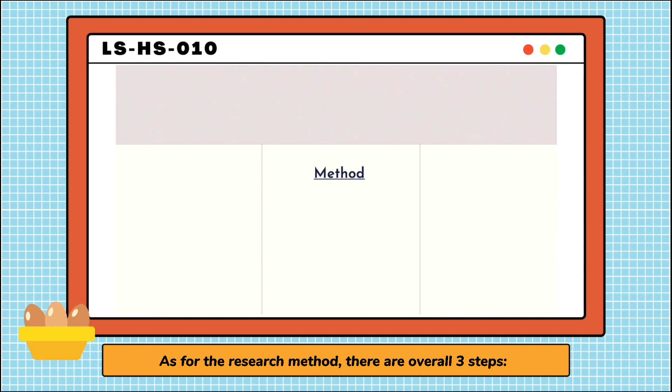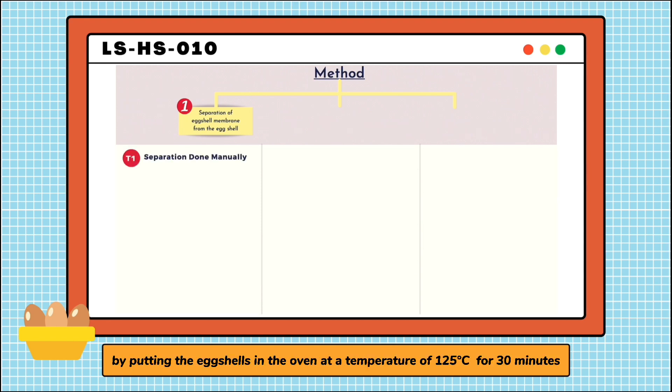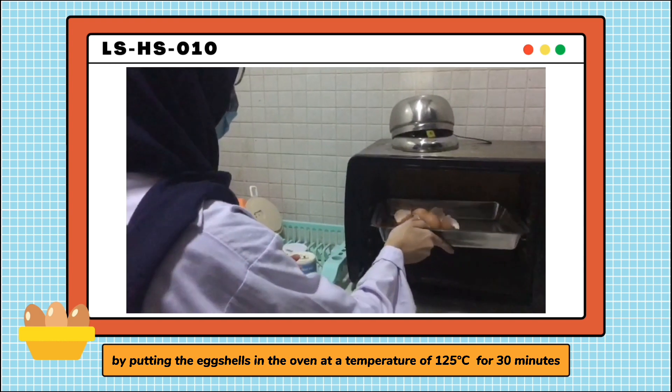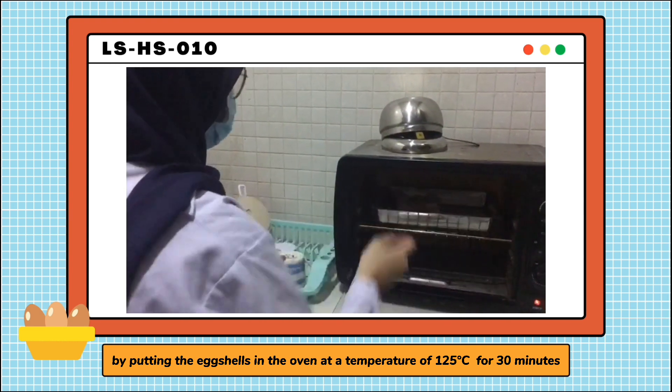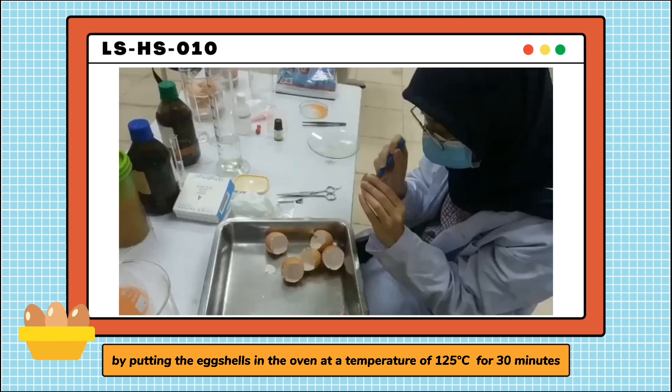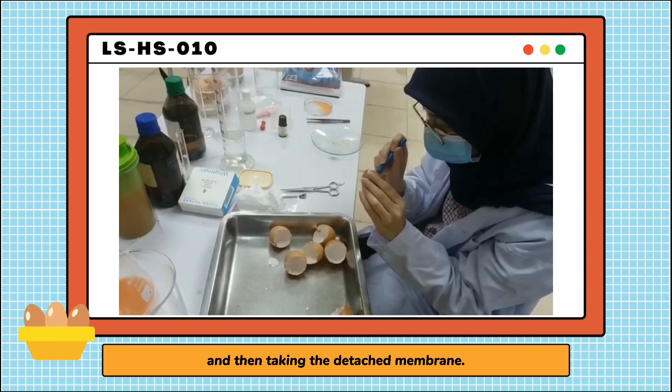As for the research method, there are overall three steps. The first step is we separated the membrane from the eggshells using two methods. The first method, or T1, is manual, by putting the eggshells in the oven at the temperature of 125 degrees Celsius for 30 minutes, and then taking the detached membrane.